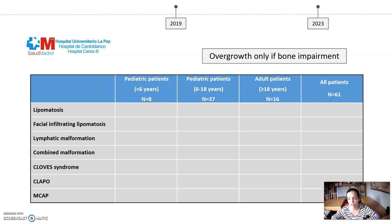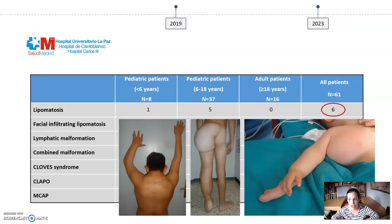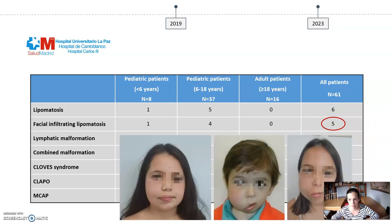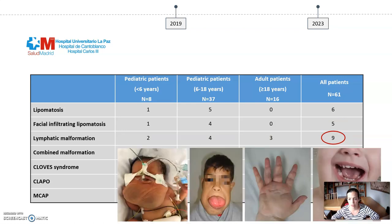We classified patients according to their phenotype, depending on the presence of vascular malformations and overgrowth, considering overgrowth only when there was bone impairment. We had 6 patients with lipomatosis and 5 with facial infiltrating lipomatosis. We had 9 patients with lymphatic malformations: 3 had giant lymphatic malformations involving head and neck requiring tracheostomy in the neonatal period, 5 had diffuse lymphatic malformations in the upper limbs, and one presented a generalized lymphatic anomaly with retroperitoneal and lower limb involvement.